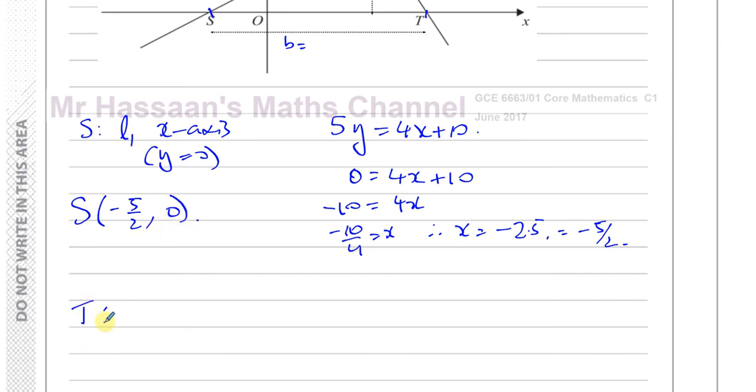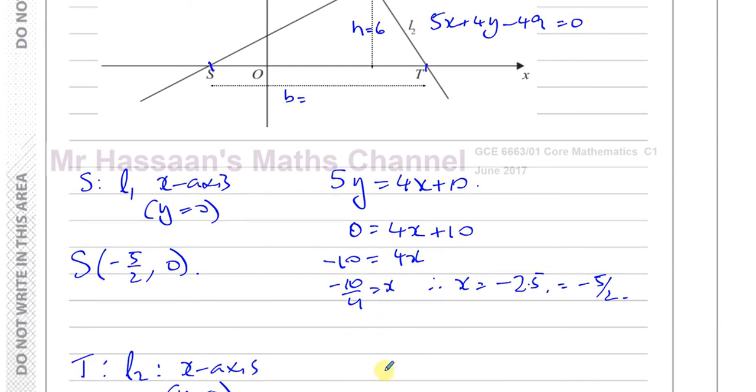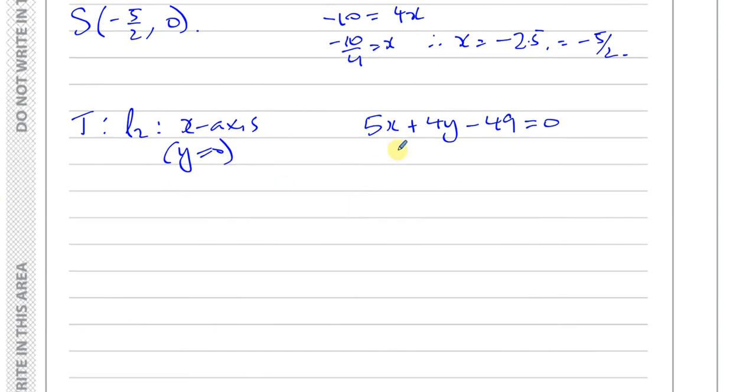And the coordinates of point T is where line 2 hits the x-axis. Again, where y equals 0, but this time on the equation of line 2, which is 5x plus 4y minus 49 equals 0. So to find when y equals 0, you've got 5x plus 0 equals 49. So 5x equals 49. x is equal to 49 over 5. So the coordinates of T are 49 over 5 and 0.